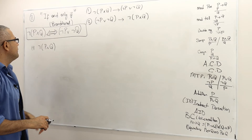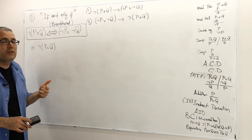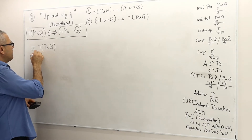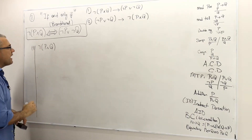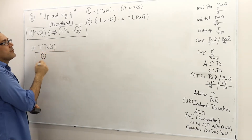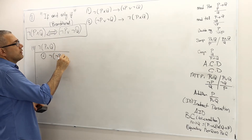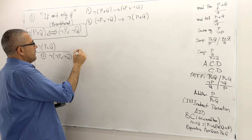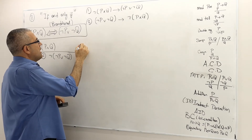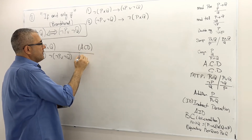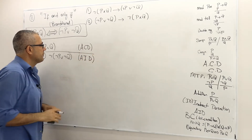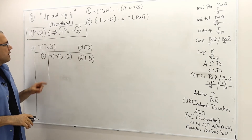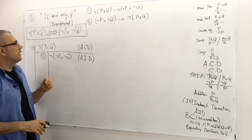A direct proof could be difficult, so I'm going to prove it indirectly. That means I am going to deny the conclusion, which is not P or not Q. This is the assumption for conditional derivation, and this other assumption is for indirect derivation because I am trying to get a contradiction.